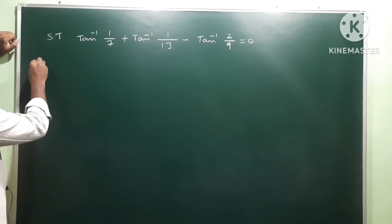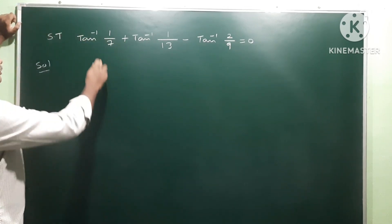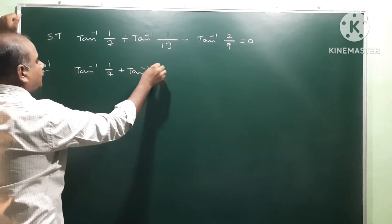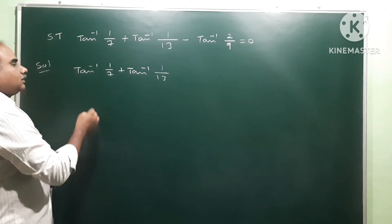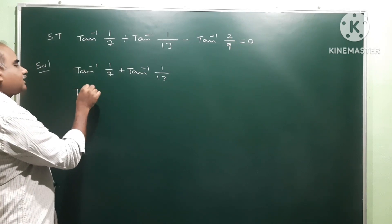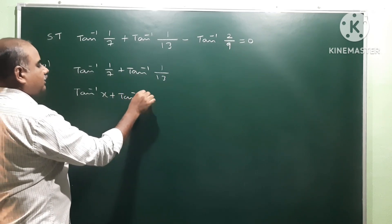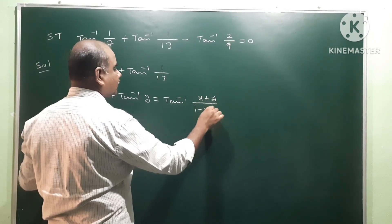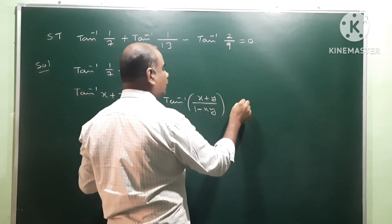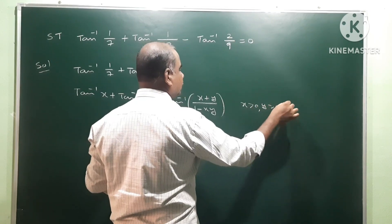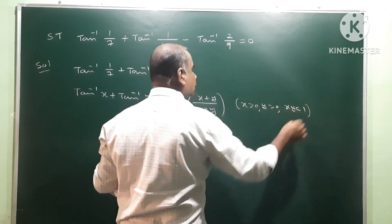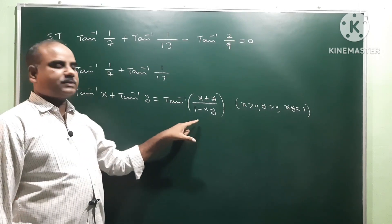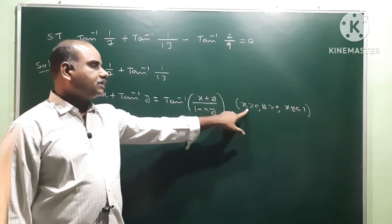So we have to do it. Solution: first we take these two terms. The formula is: tan inverse x plus tan inverse y is equal to tan inverse of x plus y by 1 minus xy, when x greater than 0, y greater than 0, and x into y is less than 1. If these conditions are satisfied, we apply this formula.